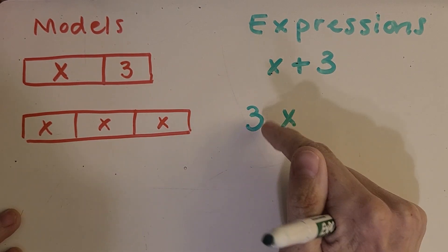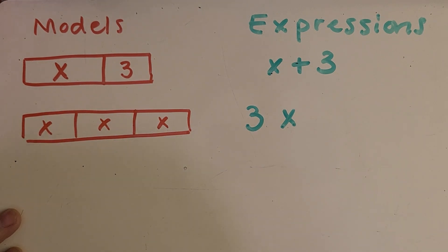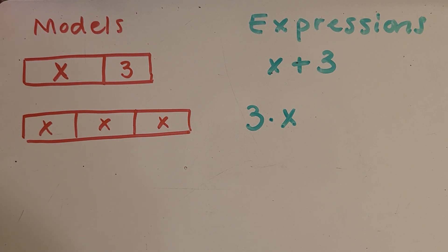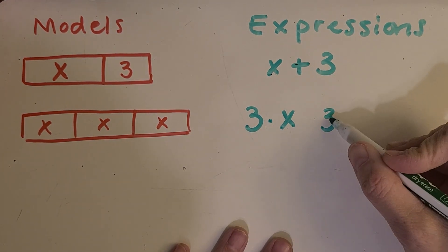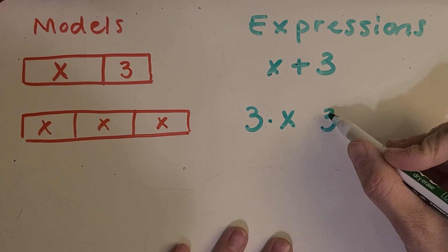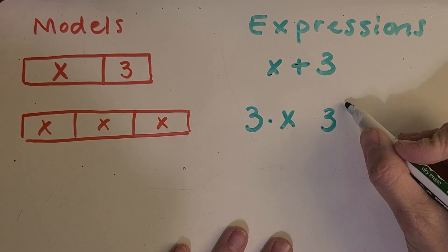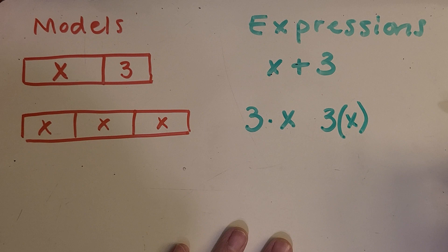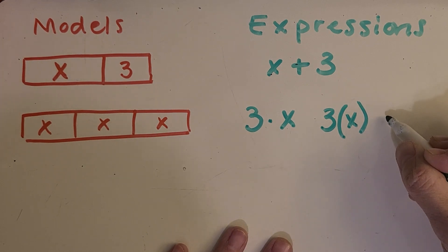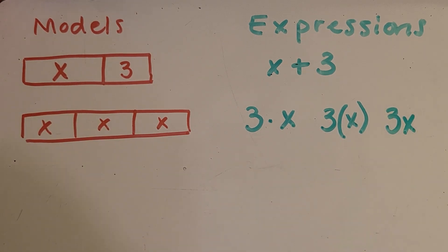So there's a couple different choices. You could use a dot to show multiplication. Can you think of another way to represent multiplication? Some people might remember from studying this last year that you can also use a letter or a number bumped up right next to a parentheses like that, and that means, always means to multiply. Or you could just put the number and the letter right next to each other, and that also means to multiply. All three of those ways will work.